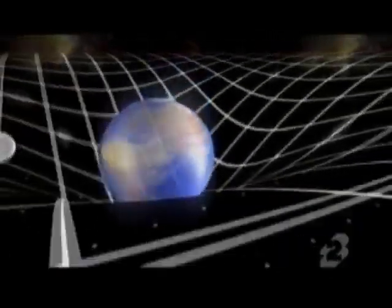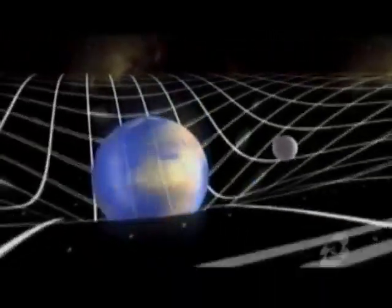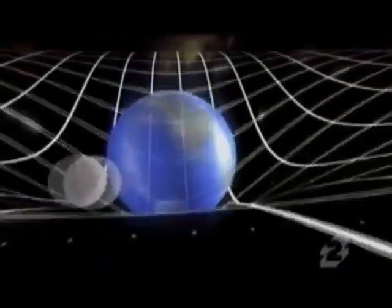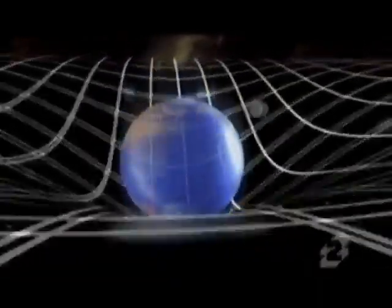Like the surface of a trampoline, this unified fabric is warped and stretched by heavy objects like planets and stars. And it's this warping or curving of space-time that creates what we feel as gravity.